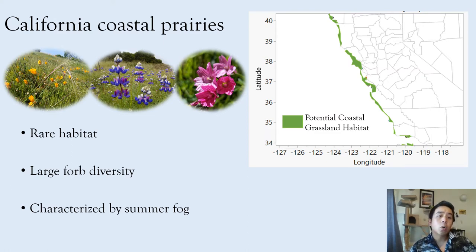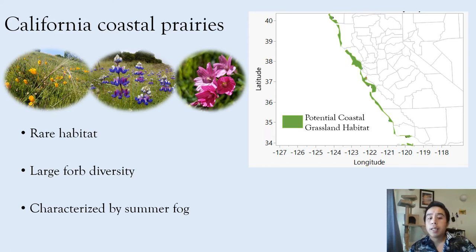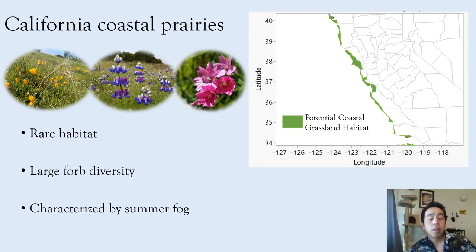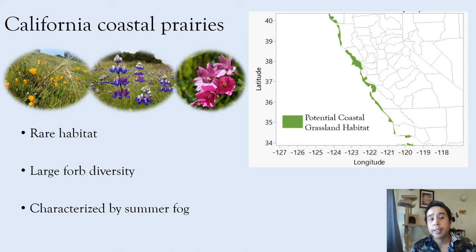What sets coastal prairies apart and makes them unique is the fact that they have summertime fog that often contributes summertime water to plants, allowing them to persist or grow a little more in the summer, which encompasses up to 40 to 60 percent of summer days.